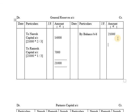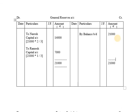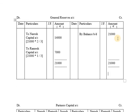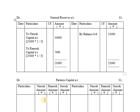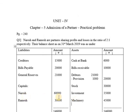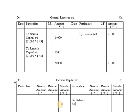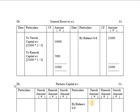After the general reserves account, we prepare the partners capital account. The partners are Naresh, Ramesh and Suresh. The format for partners capital account has columns for Particulars, Naresh Amount, Ramesh Amount, Suresh Amount on both debit and credit sides. As capital is a liability and all liabilities have credit balance, it is shown as 'By balance brought down.' The capital of Naresh is 60,000 whereas Ramesh is 30,000.